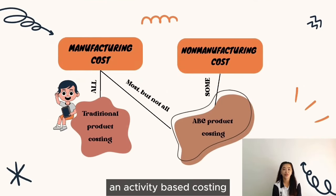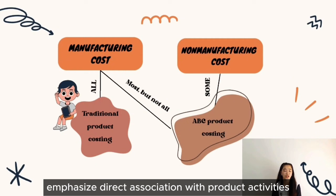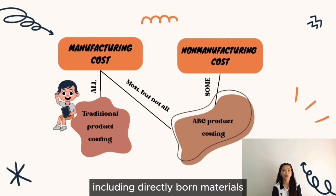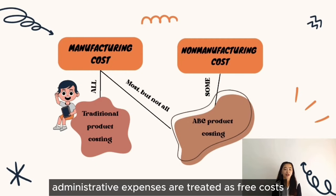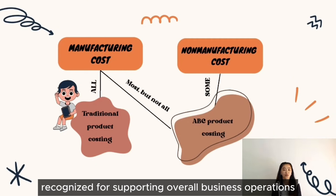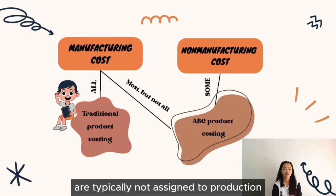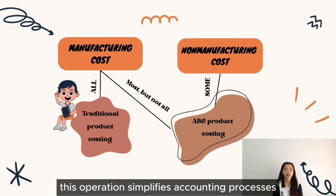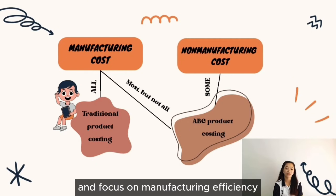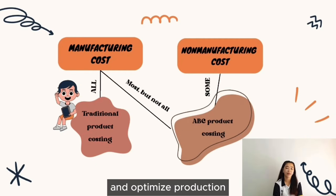Non-manufacturing costs and Activity-Based Costing: Manufacturing costs are assigned to products to emphasize direct association with product activities, including direct labor and materials. Selling, general, and administrative expenses are treated as period costs, recognized for supporting overall business operations within a specific time frame. Non-manufacturing costs are typically not assigned to production in traditional cost accounting due to their characterization as period costs.